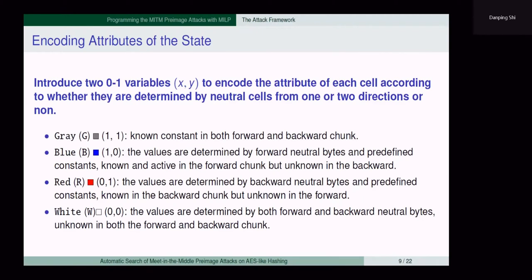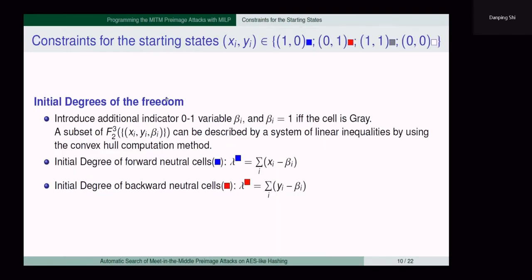The four attributes are encoded by two variables. A gray cell is encoded by (1,1) — constant bytes known in both chunks. A blue cell is encoded by (1,0) — determined by forward neutral bytes and constants, known in the forward chunk. A red cell is encoded by (0,1) — determined by backward neutral bytes and constants, known in the backward chunk. A white cell is encoded by (0,0) — determined by both forward and backward neutral bytes, unknown in both chunks. Thus, blue and gray cells are known in the forward chunk, while red and gray cells are known in the backward chunk.